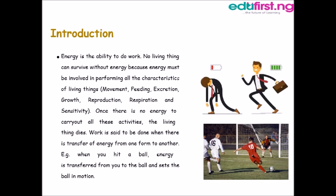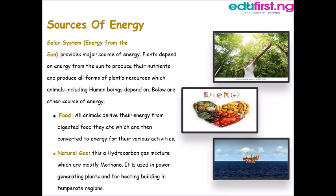Let's proceed to sources of energy. Solar energy — that is the energy from the sun — provides the major source of energy. Plants depend on energy from the sun to produce their nutrients and all forms of plant resources which animals, including human beings, depend on. We also have food: all animals derive their energy from digested food they eat, which is then used for their various daily activities.